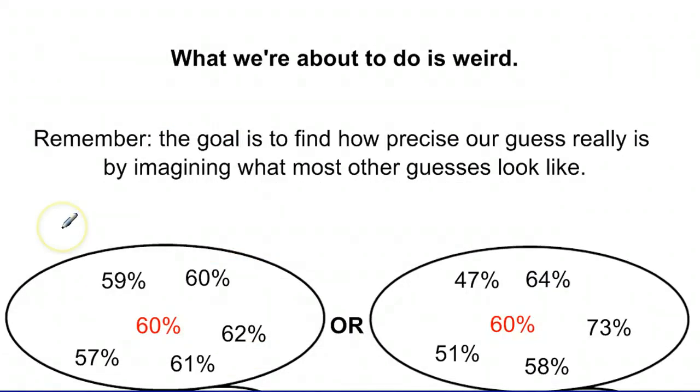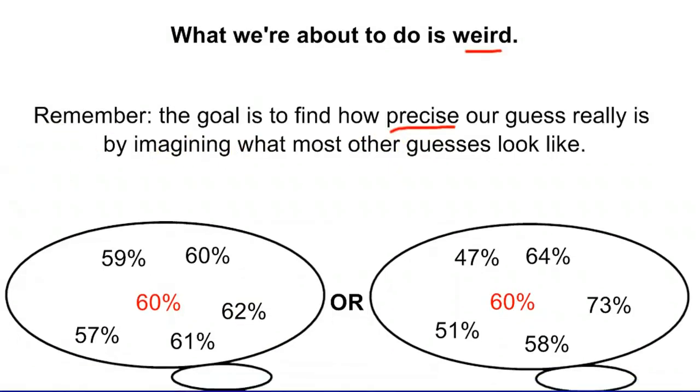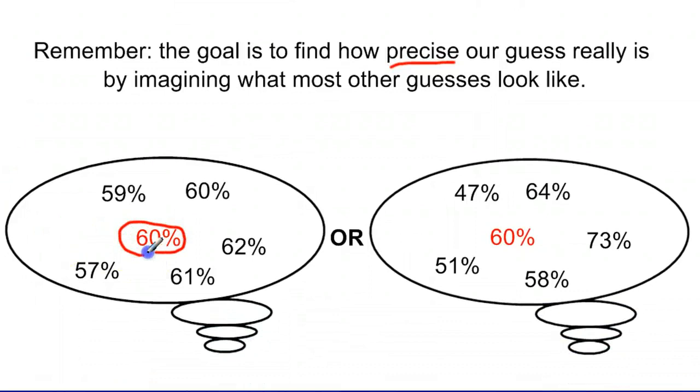Now, hang on because what we're about to do is a little bit weird. It's a little strange. This is not something that you probably would have just thought of when you woke up in the morning. Our goal is to figure out how precise our guess really is. And the way that we do that is we imagine what most other guesses are going to look like. So our guess was 60%. But let's imagine that we took other samples and it was 59% the next time and 62% and 61%. If all of our guesses are really close, every time we take a new sample we get estimates that are pretty close, we can make a pretty small interval. Most of our guesses, most of our predictions are in a small interval.